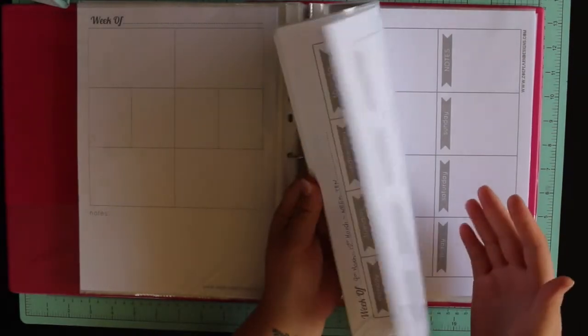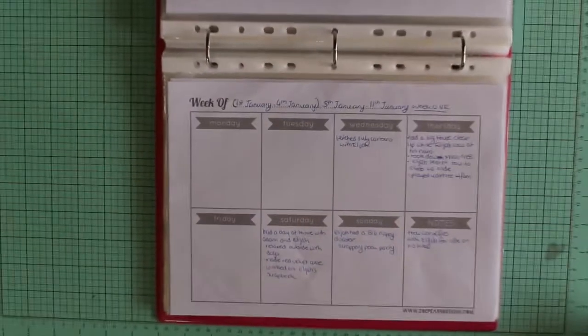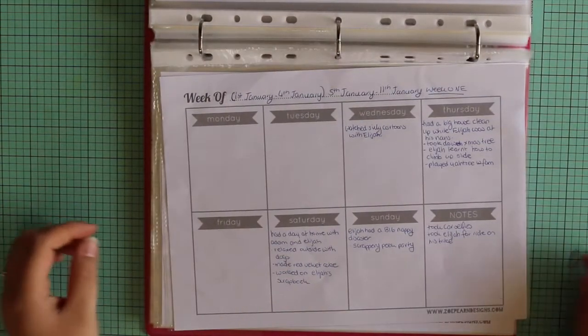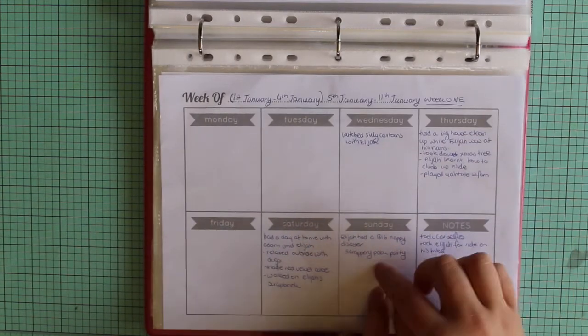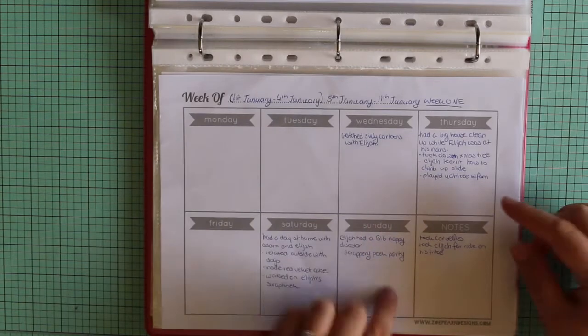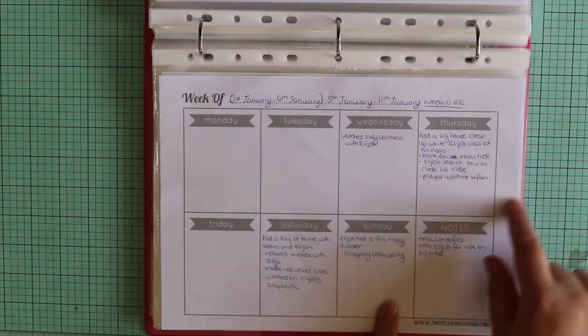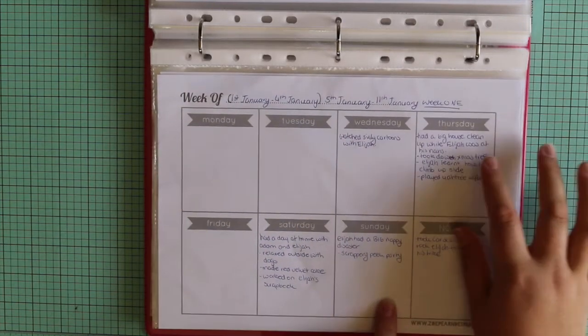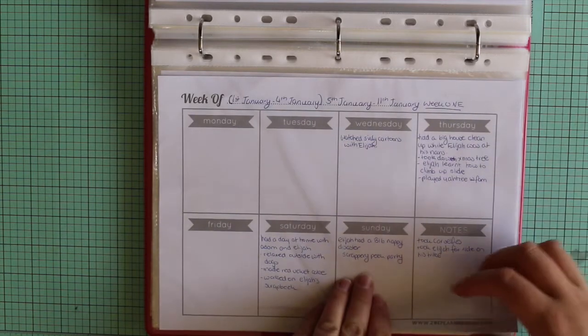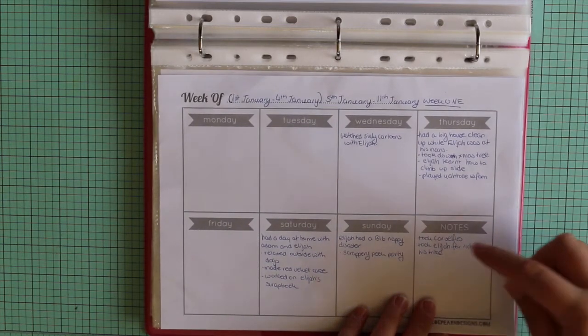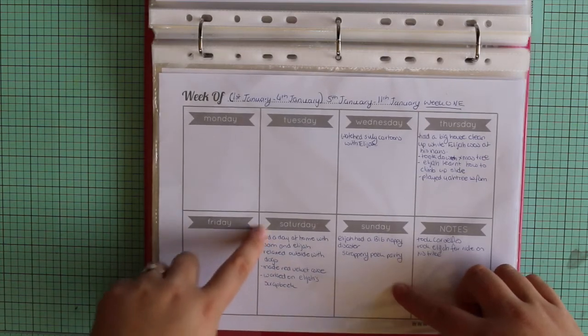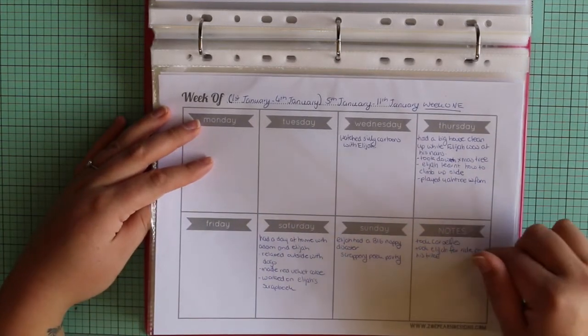Also from the same place for the printouts, you can print out these awesome week planner things. So for week one, you can go along and write down things that you've done. Like for this week, I've got on Wednesday, I watched some silly cartoons with Elijah. I had a big house clean out. I took down the Christmas tree. Elijah learned to climb the slide. We played Yahtzee with my partner's family. I made a red velvet cake. There's just all sorts of things in here that I would forget if they weren't written down.